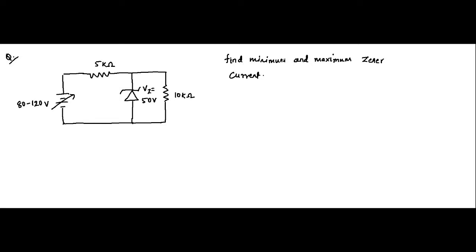Here we have to find out the minimum and maximum Zener current. The values given are: the series resistance is equal to 5 kilo ohm, the Zener breakdown voltage is equal to 50 volt, and the load resistance is equal to 10 kilo ohm.